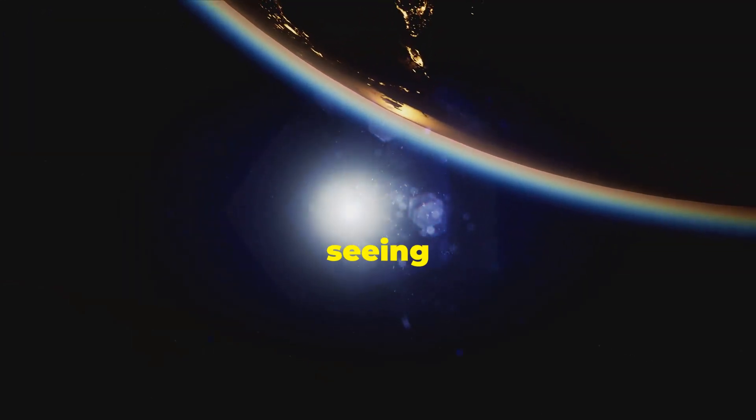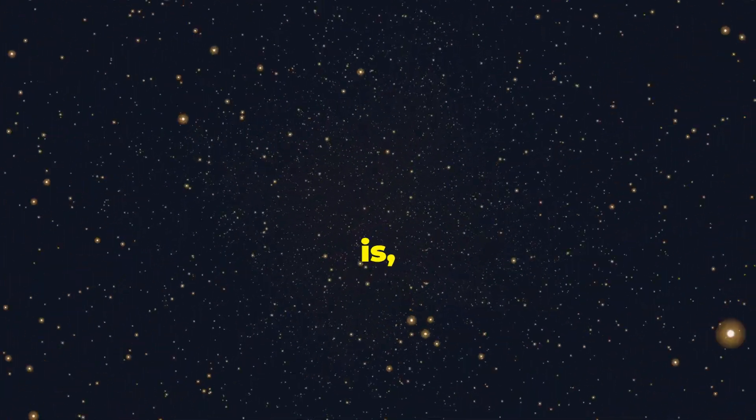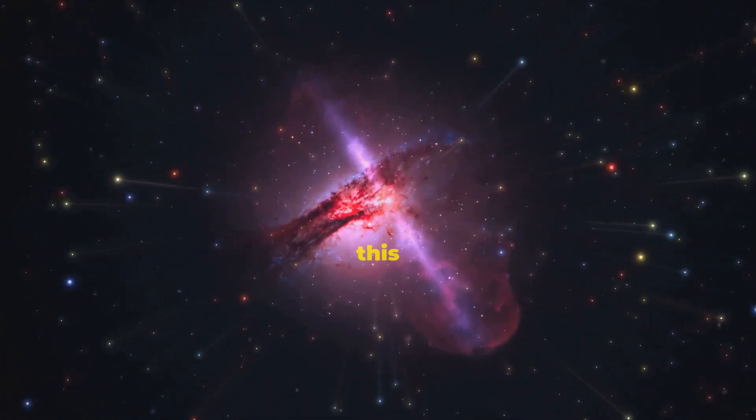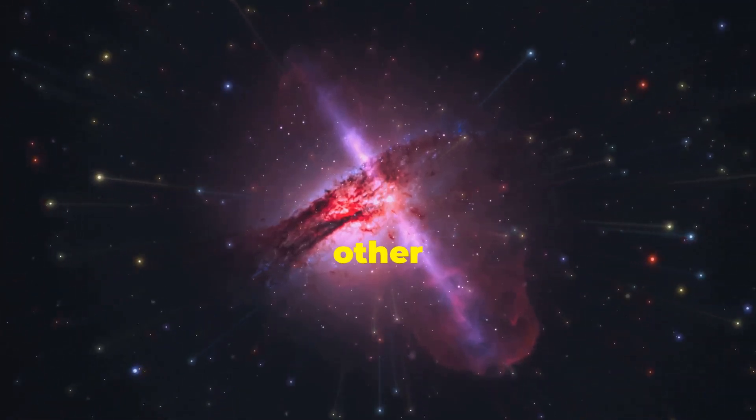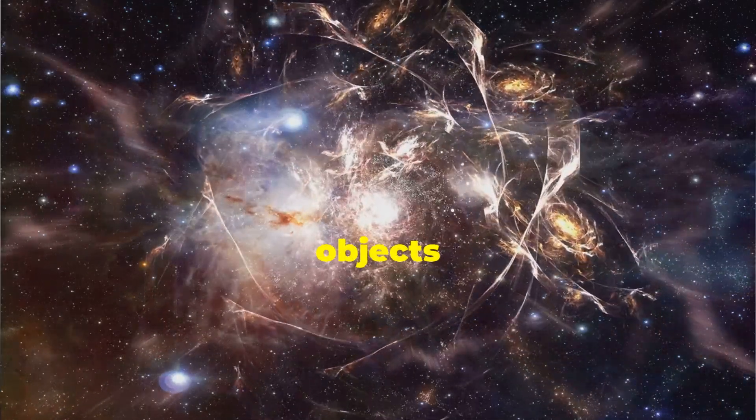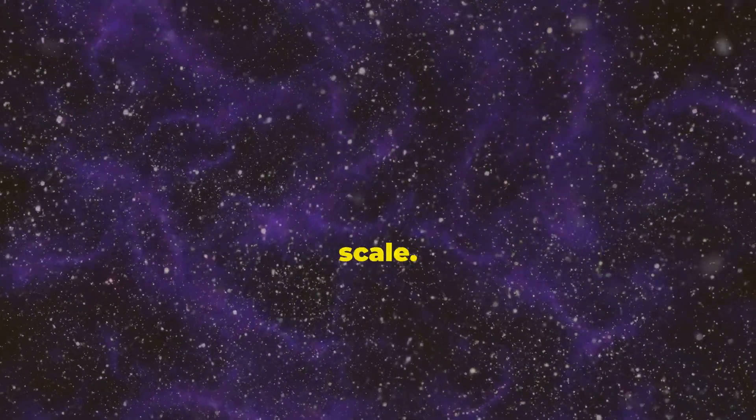So when we look at the sun, we are seeing it as it was eight minutes ago. The farther away an object is, the longer it takes for its light to reach us. By analyzing this ancient light, its redshift and other properties, astronomers can calculate the distance these celestial objects have traveled since the Big Bang, giving us a sense of the universe's unfathomable scale.